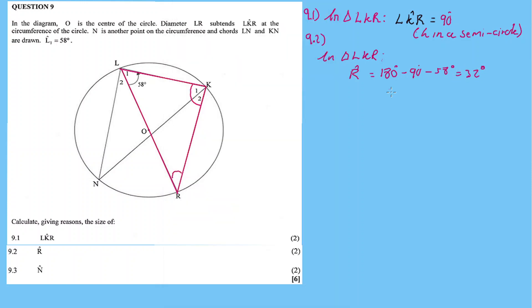180 minus 90 minus 58 equals 32 degrees, using sum of angles in a triangle.